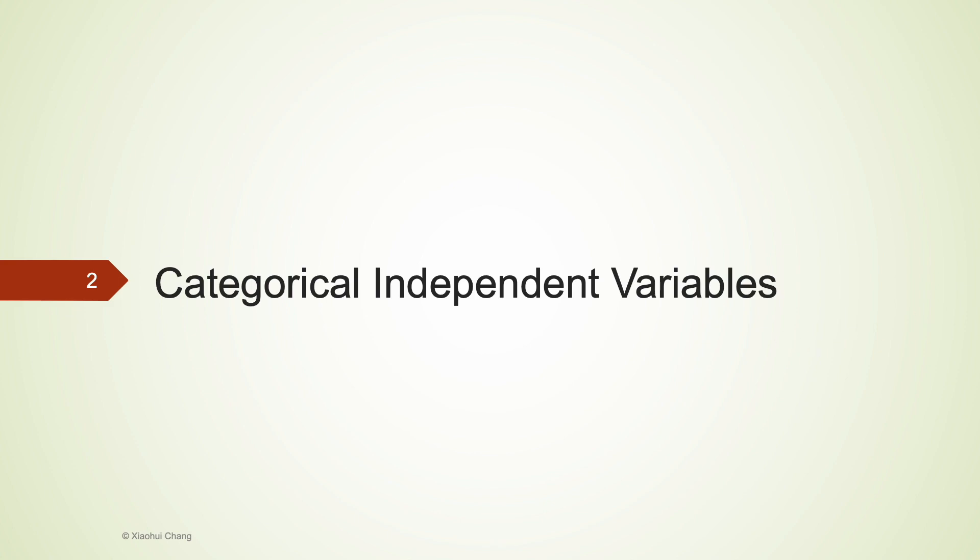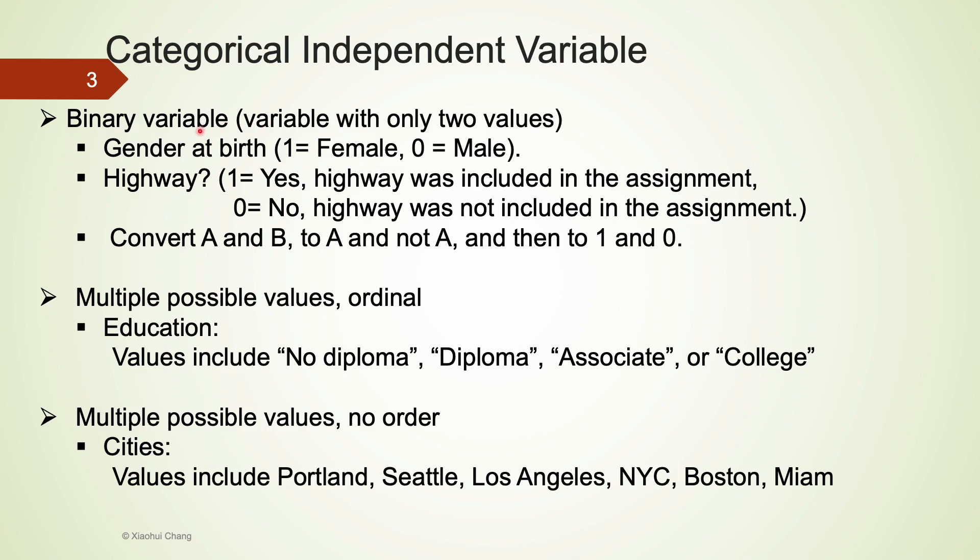Let's first take a look at independent variables that are categorical. For categorical variables that take two values only, we call them binary variables. For example, some binary variables include gender at birth. We could use 1 to represent female, and 0 to represent male.